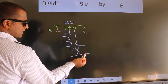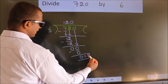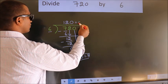No more numbers to bring down. So, we stop here. This is our remainder. This is our quotient.